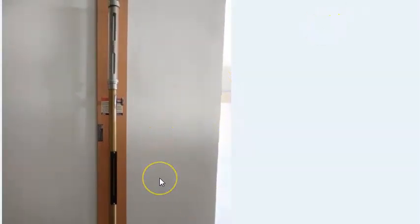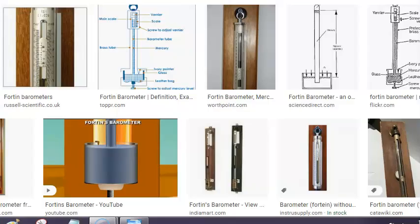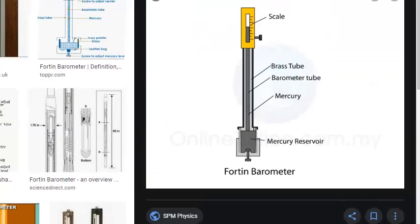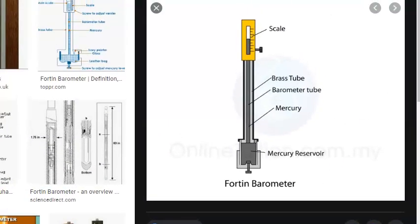This is a Fortin barometer. So basically, this Fortin barometer, what it does is it measures pressure. Barometer, so basically what is it used for? It's used for measuring atmospheric pressure.